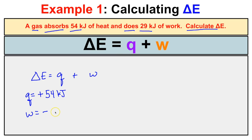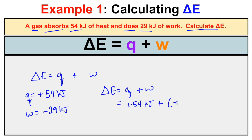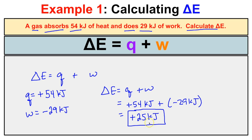Now we plug into delta E = q + w: delta E = (+54 kJ) + (−29 kJ) = +25 kJ. The positive sign means the system is overall absorbing energy, making this an endothermic process — the system is absorbing energy from its surroundings.